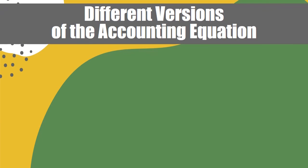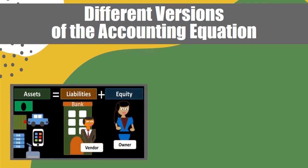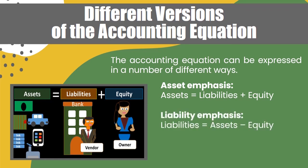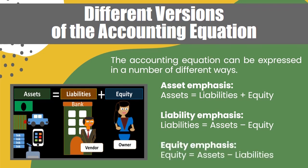There are different versions of the accounting equation na need din nating malaman. Ang una ay ang asset emphasis or yung main accounting equation — yung pinaka-common: Assets equals Liabilities and Equity. At ang liability emphasis naman ay: Liabilities equals Assets minus Equity. Ang equity emphasis ay: Equity equals Assets minus Liabilities.